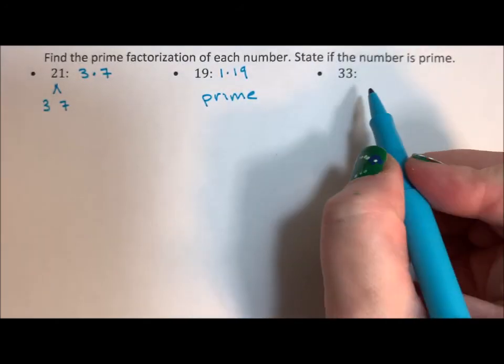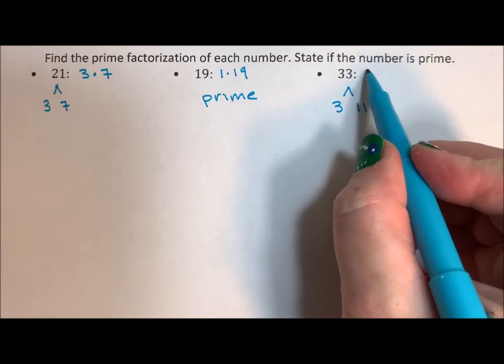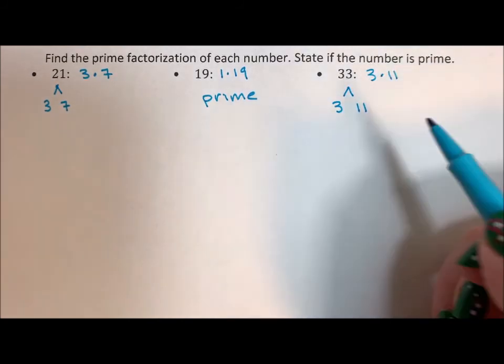33, 3 times 11. Well, 3 and 11 are both prime, so it's 3 times 11 and this is not prime.